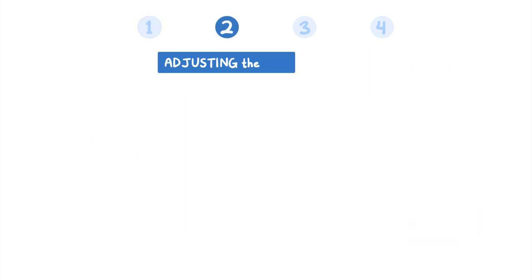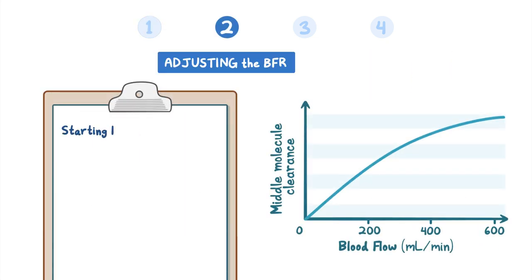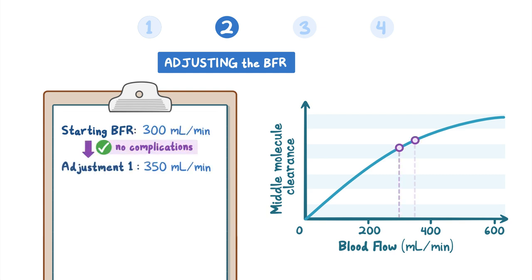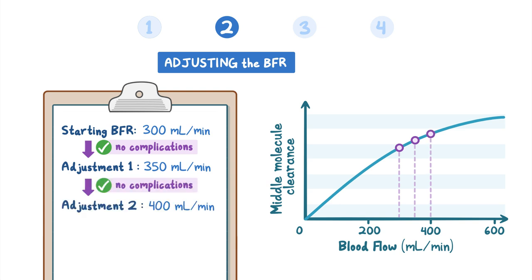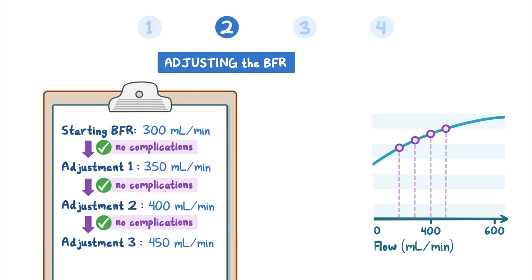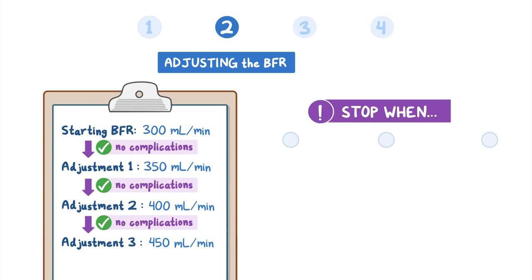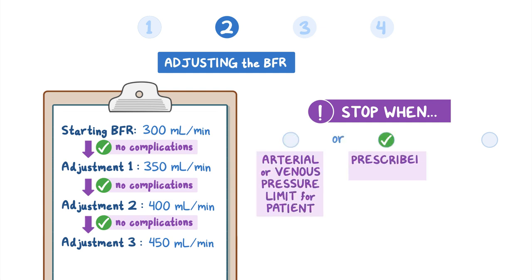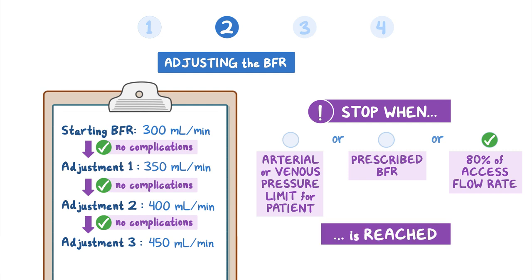Step 2 adjusts the BFR. Starting with the patient's previous HD BFR, studies suggest gradually increasing the flow rate by 50 milliliters per minute after each session without complication. Typically, BFRs for high-volume post-dilution HDF range from 350 to 450 milliliters per minute. It is recommended to stop increasing the blood flow rate when either the arterial or venous pressure limit for the patient, the prescribed blood flow rate, or 80% of the access flow rate, typically 800 milliliters per minute, is reached to prevent adverse events.